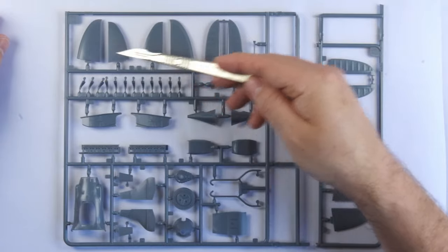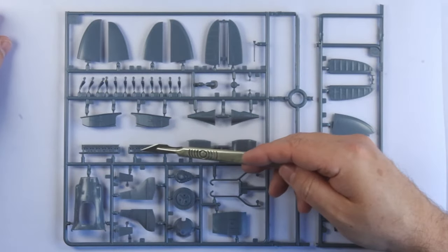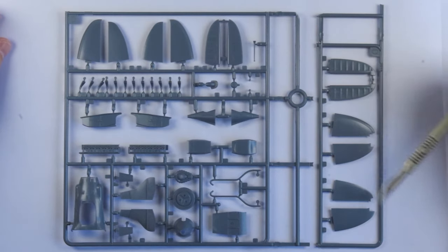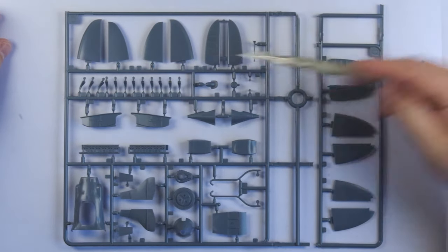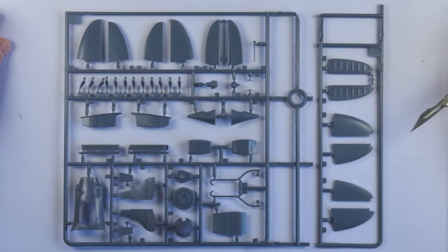The final couple of frames are much smaller than the main two, and cover more fiddly bits, and the rear horizontal stabilizers, of which there are two types depending on the production variant of the 202 you intend to model.